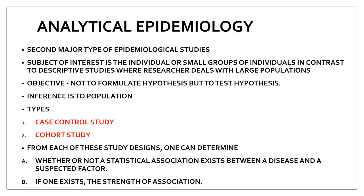So what is analytical epidemiology? It is the second major type of epidemiological study — the first being descriptive. In analytical epidemiology, the subject of interest is an individual or a small group of individuals, in contrast to the descriptive study where the researcher deals with a large population. The objective here is not to formulate a hypothesis but to test it.